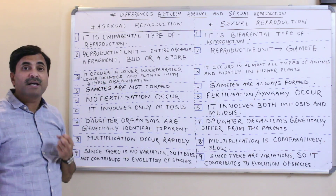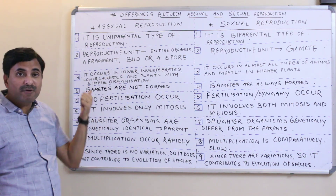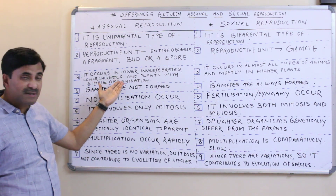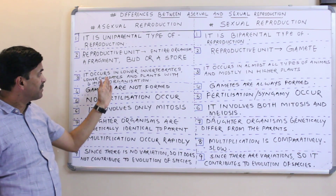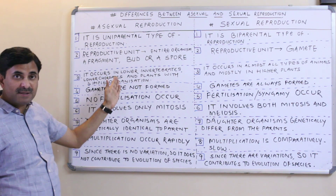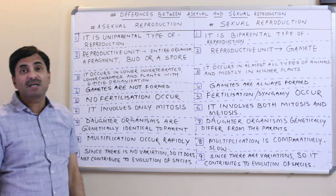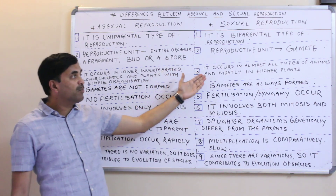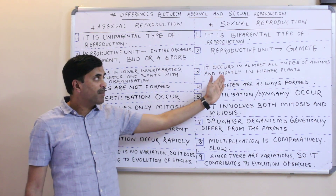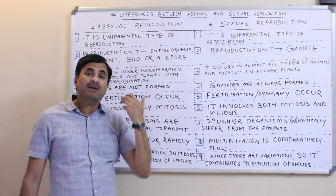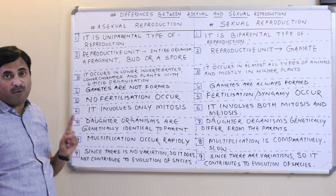Asexual reproduction occurs in lower invertebrates, lower chordates, and also in plants which have simple organization. Sexual reproduction, on the other hand, occurs in almost all types of animals and mostly in higher plants.